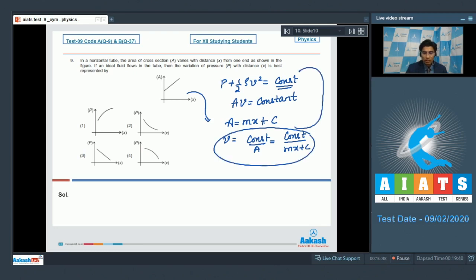On substituting the value of v from this expression in the Bernoulli's theorem, we can write down that P plus half rho, let the constant be k by mx plus c square is another constant, let this be small a. From this expression, we can write down that P has a variation with x as P is equal to a minus b by mx plus c square. Please note that we have combined all the constants into two constants that is a and b.